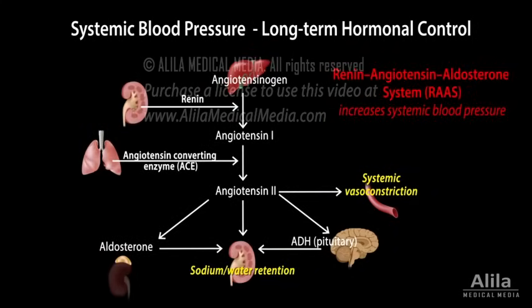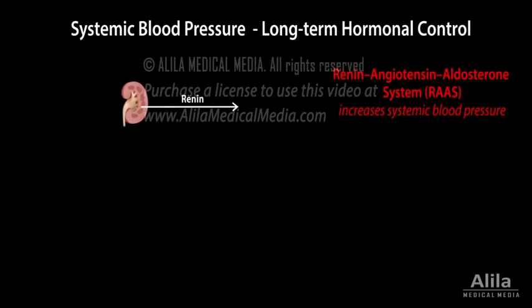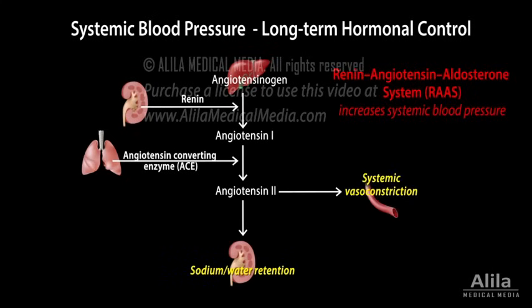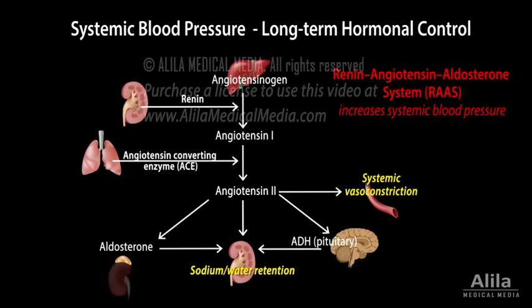The renin-angiotensin-aldosterone system, RAS, is a major hormonal system that increases systemic blood pressure. Renin is released from the kidneys upon a drop in blood pressure. Renin converts angiotensinogen into angiotensin-1, which is then converted into angiotensin-2. Angiotensin-2 increases blood volume and pressure via many mechanisms: it promotes sodium and water retention in the kidneys, stimulates vasoconstriction, and induces the release of aldosterone and antidiuretic hormone, two other hormones that promote sodium and water retention.